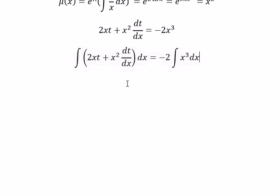The integral of this gives us x²t on the left. On the right, we get -2 times x⁴/4 plus C. Negative 2 simplifies with 4, giving us -x⁴/2 plus C.